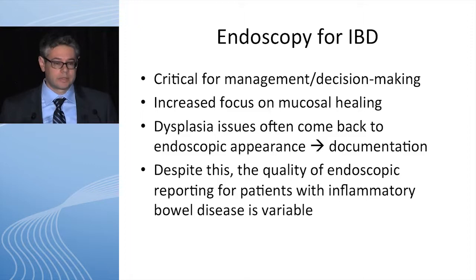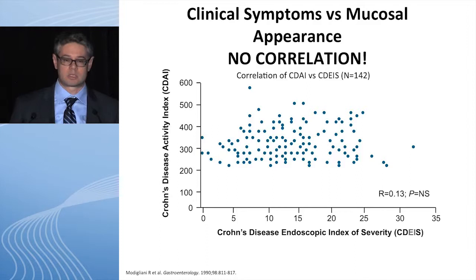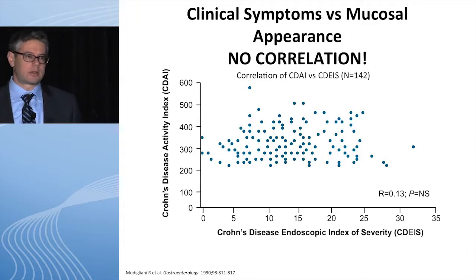Why do we do endoscopy for IBD? Endoscopy is critical for the management and decision-making of many kinds when it comes to IBD. Certainly, the increased focus on mucosal healing in order to make and guide those treatment decisions is important. Dysplasia issues often come back to how that endoscopic appearance was initially described at the time dysplasia was identified: where was it, what did it look like, where were the biopsies taken from? These are critical documentation issues that sometimes require a repeat procedure because it wasn't documented well the first time around. Despite all this, the quality of endoscopy reporting is highly variable when it comes to inflammatory bowel disease.